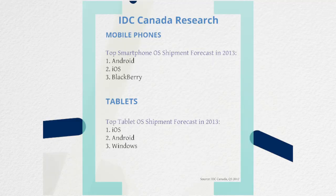When we look at top smartphone shipments in 2013 in terms of operating systems — because obviously you want to know what to build for — for phones, Android is number one, iOS number two, and BlackBerry number three. Over the next five years, we expect those top two to remain pretty consistent. We do expect Windows could sneak up into the third space possibly within the next five years.